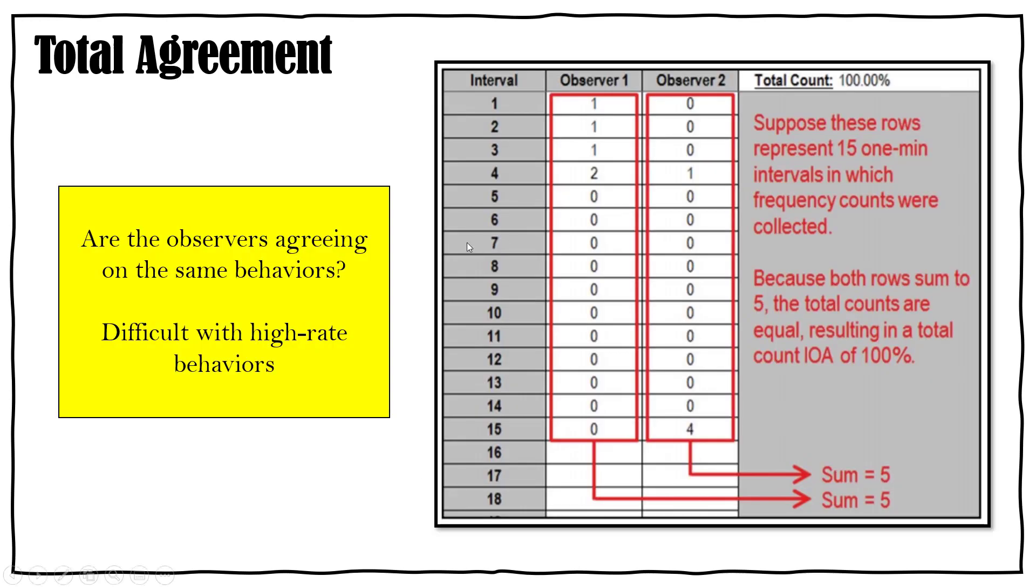Now with total agreement there are some disadvantages that you just need to be aware of. The first one is that you aren't really sure, since you get a total mark and you're dividing those totals, if the observers are agreeing on the same behaviors. So for instance, look at this chart. You have interval one, observer one, observer two. Well in the first interval observer one records one instance where observer two records zero. Interval four, observer one records two instances where observer two only records one. And when you get down to the bottom, the sum is both five. So five divided by five times 100 is 100%.